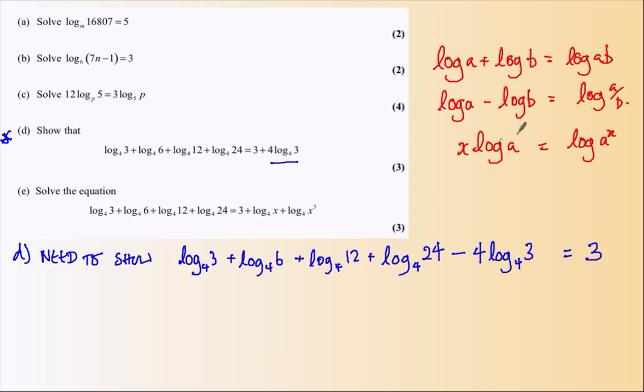Putting all those additions together, I've got 3 times 6 times 12 times 24, log base 4 of course, minus log base 4 of 3 to the power of 4. And this will give me logarithm, let's put it all together, 3 times 6 times 12 times 24 all divided by 3 to the power of 4.